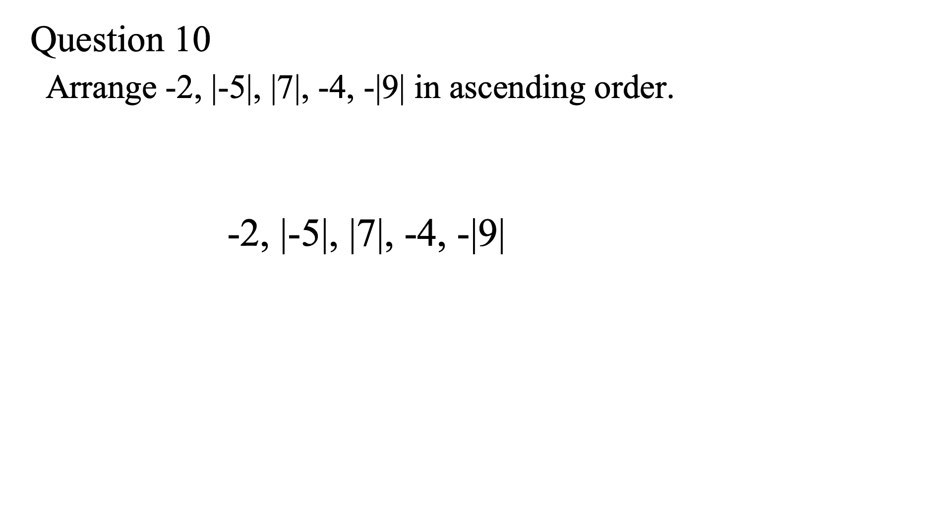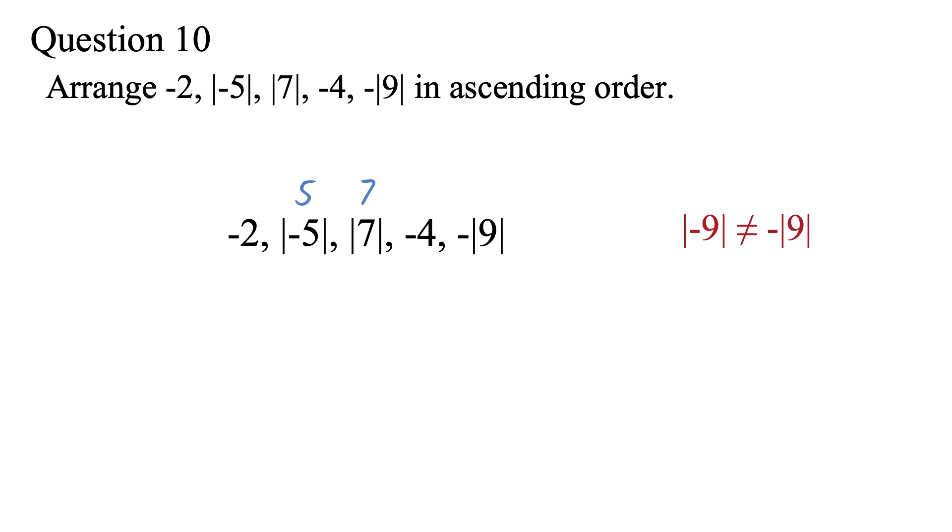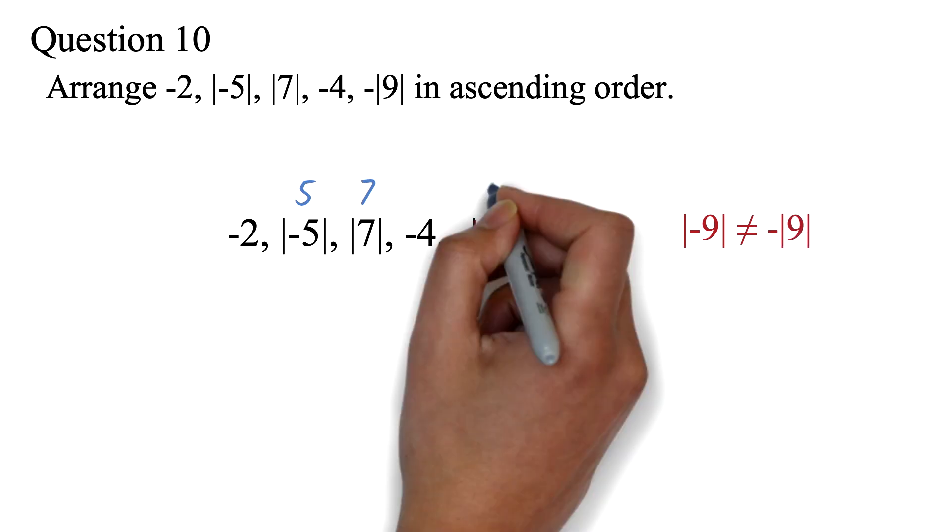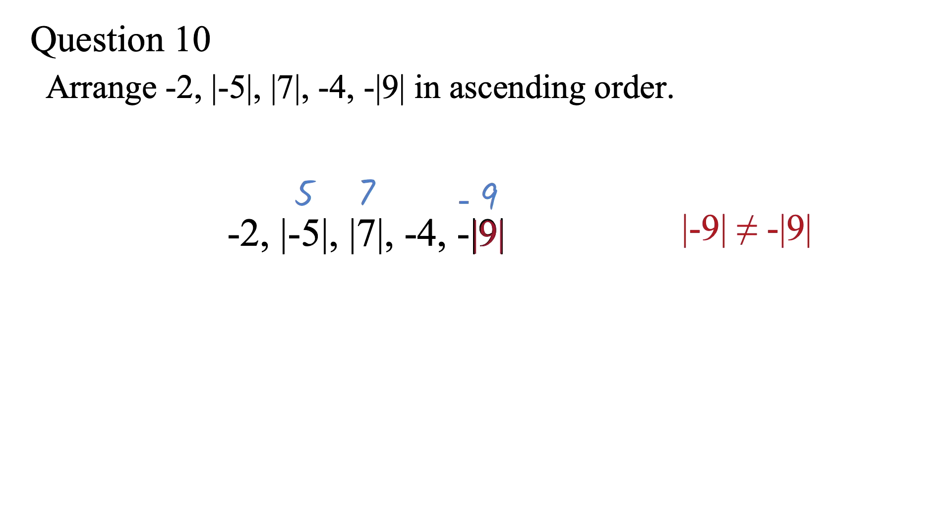We know that the absolute value of negative 5 is simply 5. We also know that the absolute value of 7 is simply 7. For the negative absolute value of 9, it's a trick. You'll notice that so far the negatives have been within the absolute value marks, but this has the negative outside the absolute value marks. So we are not finding the absolute value of negative 9 like we did for negative 5. We find the absolute value of 9, which is 9, and then bring the negative. So we have negative 9. Now let's arrange them.